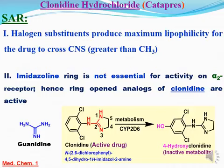يعني إيه الكلام ده؟ الـ imidazoline ring ده مش essential for activity، إيه اللي essential؟ وجود الـ guanidine arrangement. أنا عندي الاتنين nitrogen بتوع الـ imidazoline عاملين مع الـ N - عاملين guanidine arrangement. إذاً لو أنا فتحت الـ ring ده وحطيت guanidine بس مكانها بيديني members برضو active. كمان الـ halogens اللي هما 2,6-dichloro يوفروا maximum lipophilicity for the drug to cross CNS greater than the vessel. كمان الـ imidazoline ring not essential for activity على الـ alpha-2 receptor.